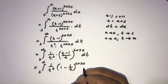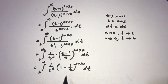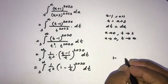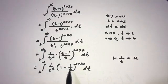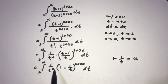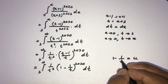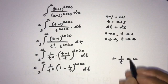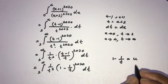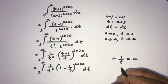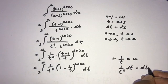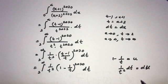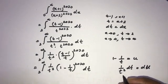We can simplify (t-1)/t as 1 - 1/t. So the integral becomes the integral from 2 to infinity of (1/t^2) times (1 - 1/t)^2020 dt. Now we apply a second substitution: let u = 1 - 1/t. The derivative of 1/t is 1/t^2, so 1/t^2 dt = du.